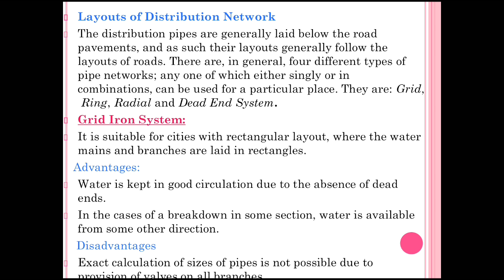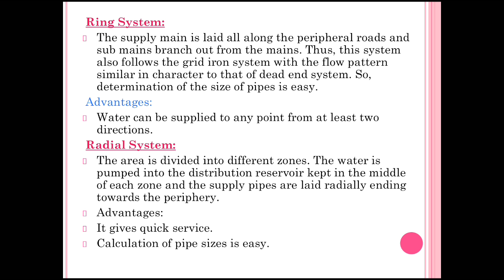The first type is the grid iron system. It is suitable for cities with a rectangular layout where the water mains and branches are laid in rectangles. Advantage: water is kept in good circulation due to the absence of dead ends; in cases of a breakdown in some section, water is available from another direction. Disadvantage: the exact calculation of the size of pipes is not possible due to the provision of valves on all branches. The second is the ring system — the supply main is laid along peripheral roads and sub-mains branch out of the mains, following a flow pattern similar to the dead-end system, making determination of pipe size easier.